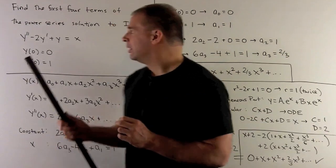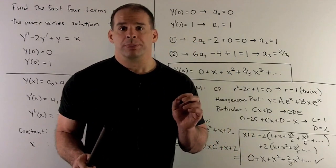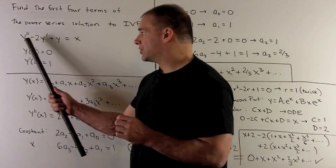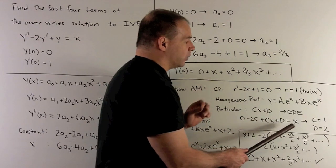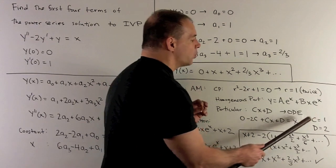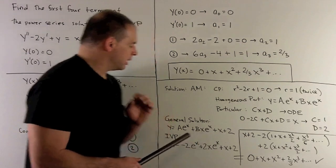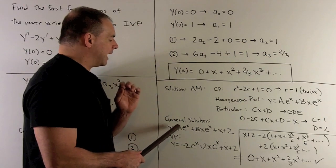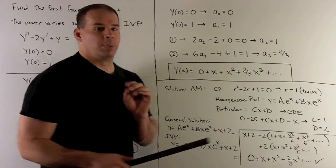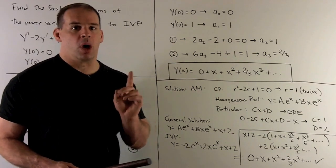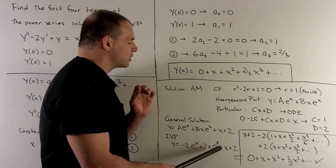Substituting cx plus d back into the left-hand side: the second derivative is zero, the first derivative is c giving minus two c, and we add cx plus d. Setting equal to x gives c equals one and d equals two, so the particular solution is x plus two. The general solution is then a e to the x plus b x e to the x plus x plus two. Applying y of zero equals zero and y prime of zero equals one yields y equals minus two e to the x plus two x e to the x plus x plus two.